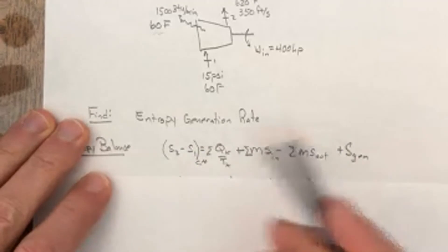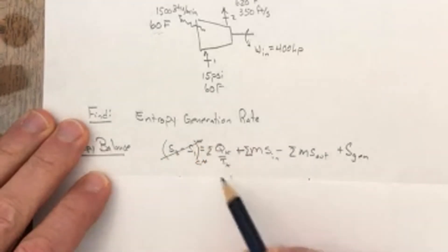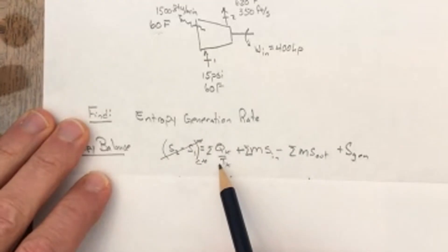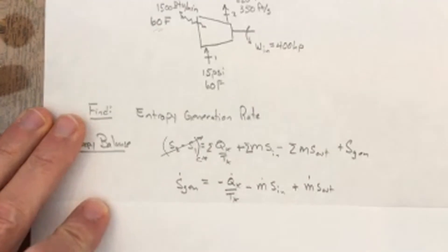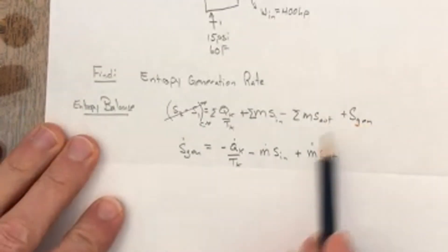Given that this is steady, again, the left-hand side would be equal to zero, and you'd just be left with these terms. There's only one heat exchange going on here, and then you've got your entropy.